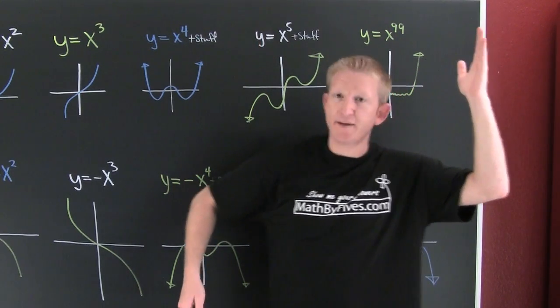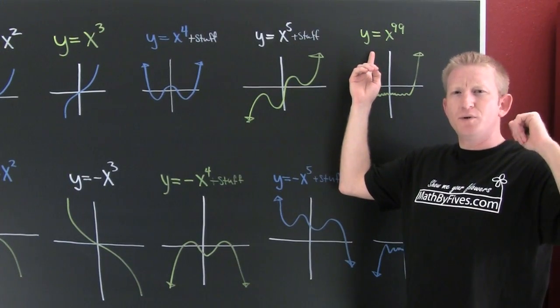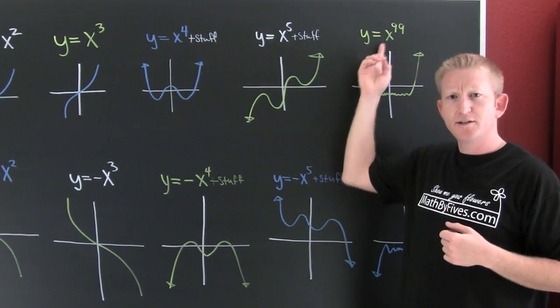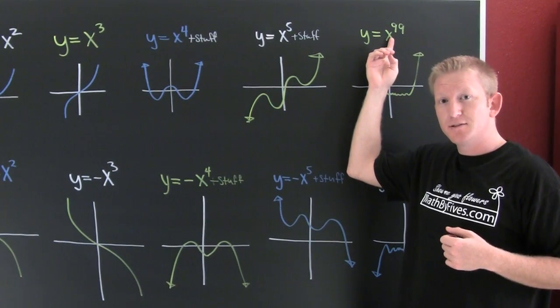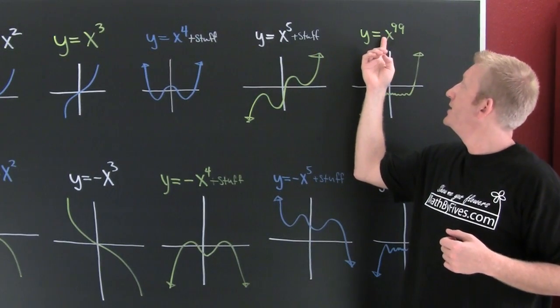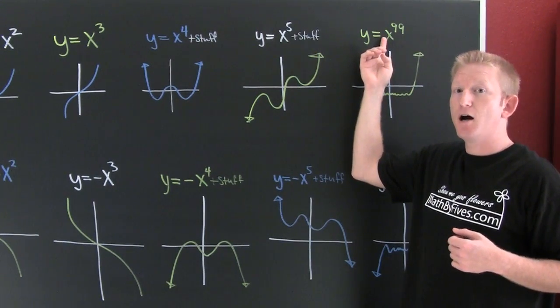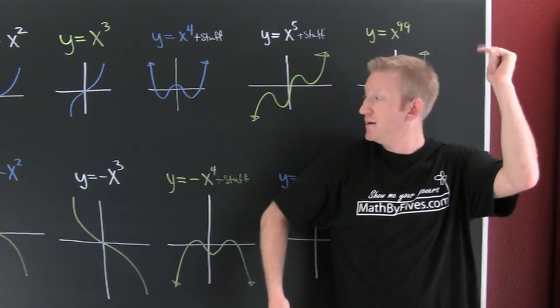X to the 99. Oh no. Is it even or odd? It's odd degree. So does that mean it's going to be mixed or the same? That's going to be mixed. And the number in front says it's going to end up like this.